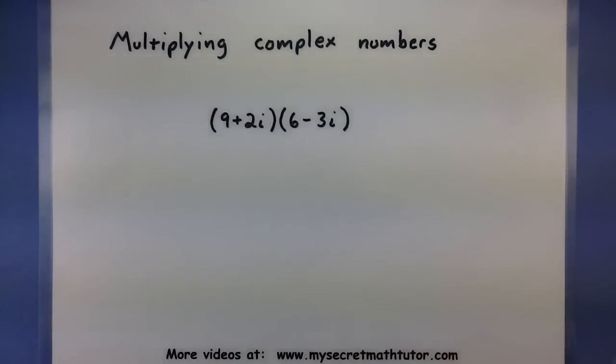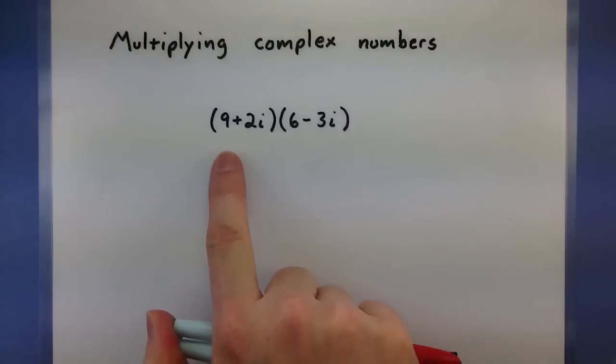Multiplying complex numbers can be a nice and easy task if you remember that it's essentially like the process of multiplying out polynomials. When you multiply out polynomials, you want to make sure that every term in one gets multiplied by every term in the other one. And that's what we're essentially going to do with these complex numbers.